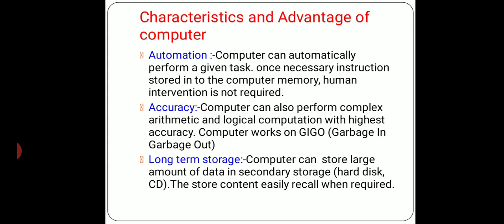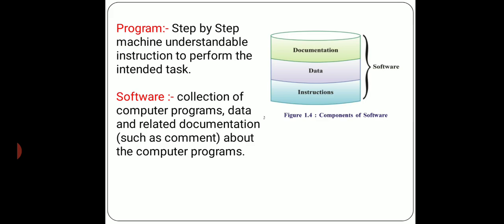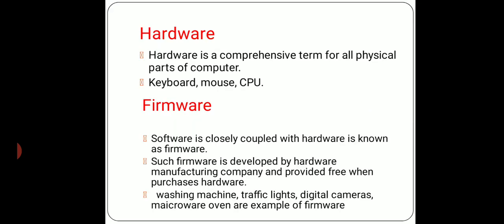Characteristics and advantages of computer: first, it is fast; second, it is automatic; third, it is programmable; fourth, it can remember stuff for a long time; and it is accurate. A computer's working capacity and speed are good and it works automatically. Today we discussed software, hardware, and firmware. Definition of software: collection of computer programs, data, and related documentation. Software means programs written step-by-step in machine-understandable language. Firmware means the software attached along with hardware.